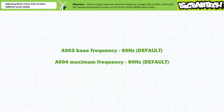Extended function parameter A004, maximum frequency, is user adjustable from 30 to 400 hertz. The default maximum frequency is 60 hertz. Let's keep the base frequency at the default setting of 60 hertz and change the maximum frequency to 100 hertz.